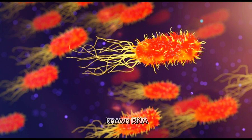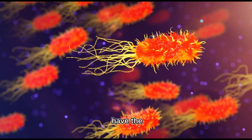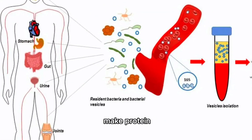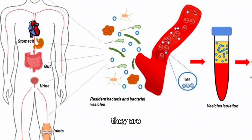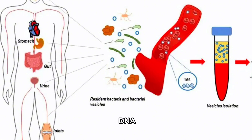Unlike other known RNA loops called viroids, obelisks can code for proteins, but they do not have the genes to make protein shells like RNA viruses do. They are also larger than plasmids, which are more commonly composed of DNA.